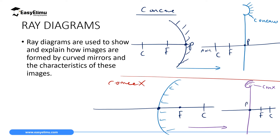If you want to place an object in front of either mirror, you place it as a single line with an arrow, 90 degrees to the principal axis. For a concave mirror, the object, F, and C are all in front of the reflecting surface. For a convex mirror, only the object is in front — F and C are behind the mirror. This is very important to note.